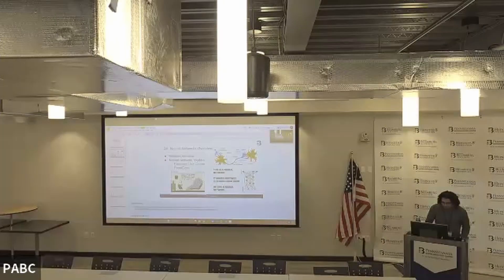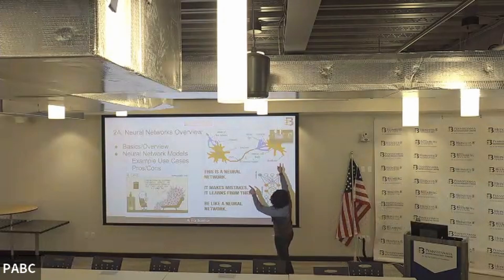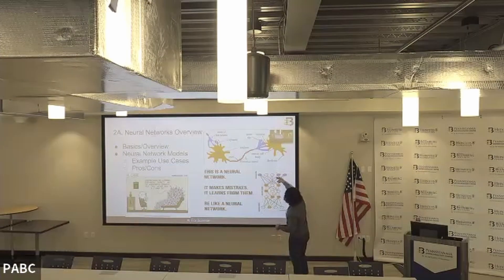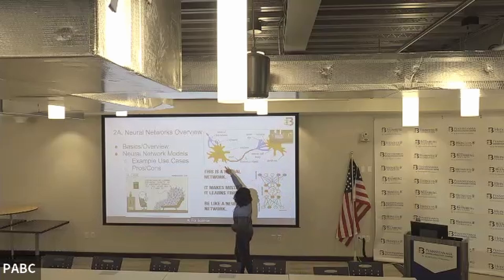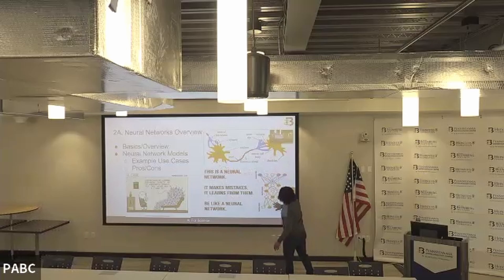A neural network is a computational model inspired by the way human brains process information. Unlike traditional models, neural networks can learn complex patterns and representations. You can see here the human brain with two neurons passing information to each other — that's what it looks like in neural networks. Information transmits from nodes through neurons, branching and receiving from each other, just like inside the human brain from a biological perspective.